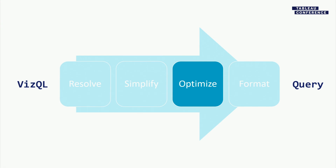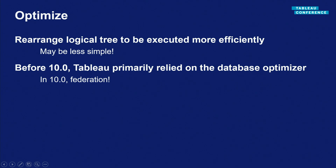Now let's move on to optimizing. Optimizing — as opposed to simplifying and rewriting — means rearranging the logical tree to be executed more efficiently. Usually that means making it simpler, and simpler is usually faster, but not always. Sometimes we do simplifications that work well in most databases but not all. For example, ordering the filters in a particular order might be advantageous depending on what kind of filters they are — it might not make any logical difference, but it might make a difference to the particular data source we're talking to.